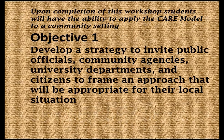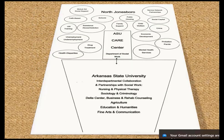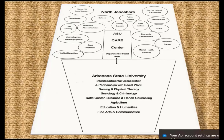The first objective of this workshop is for individuals to develop a strategy to invite public officials, community agencies, university departments, and citizens to frame an approach appropriate for the local situation. One of the first things we did was to try to configure a university-community connection. The Ecomap shows the circles of connections. Each location has its own unique kinds of agencies, issues, and health disparities, so this is just one example.